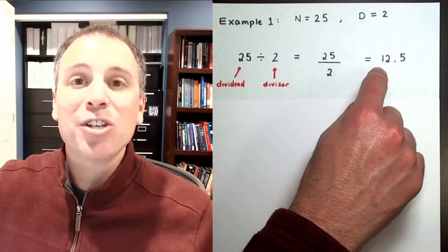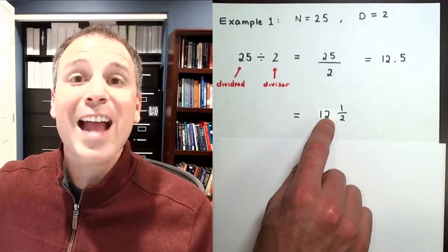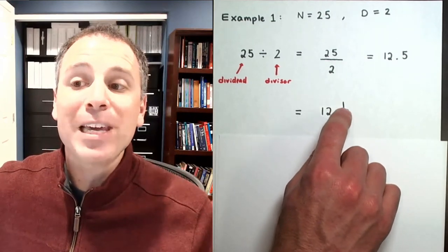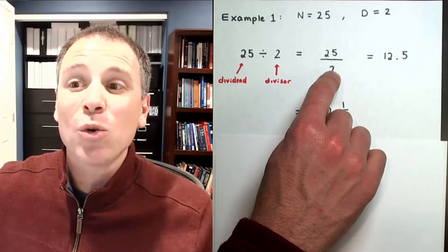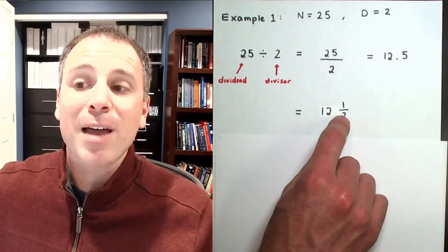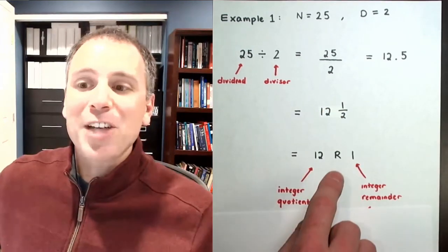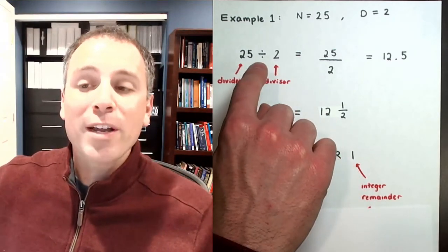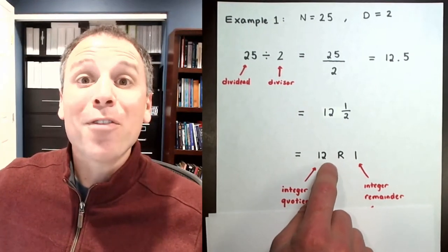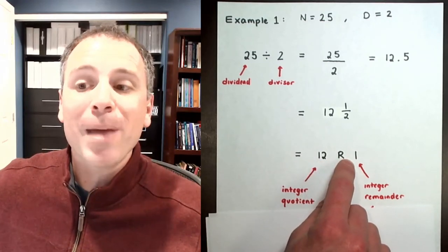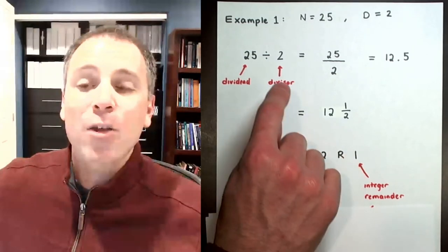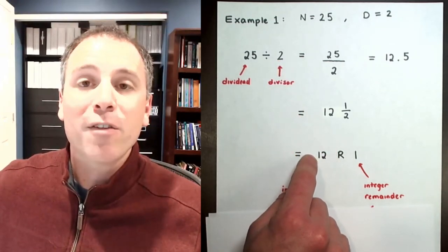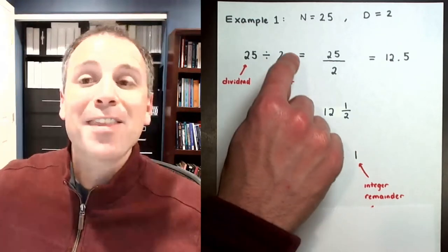We can write 25 divided by two in decimal notation as 12.5. Mathematicians write it as a mixed number: the integer part is 12, and the other part is the remaining piece of 25 that is not a full integer value of two — that is the remainder divided by the denominator, giving us 12 and one half. In remainder notation, we write this as '12 R 1': 25 divided by two produces an integer quotient of 12 and a remainder of 1.